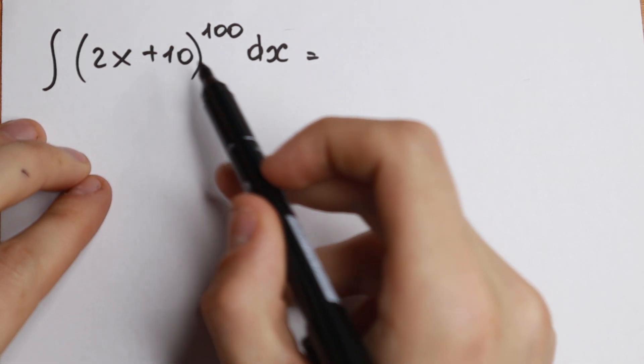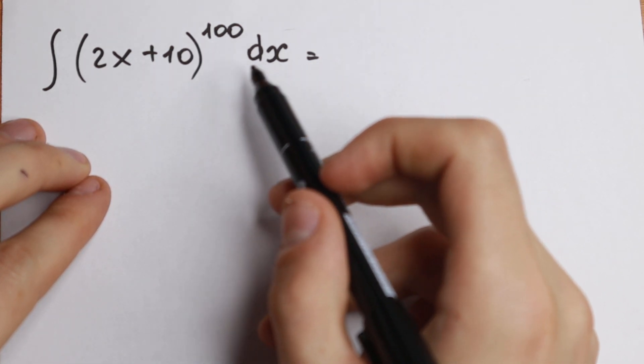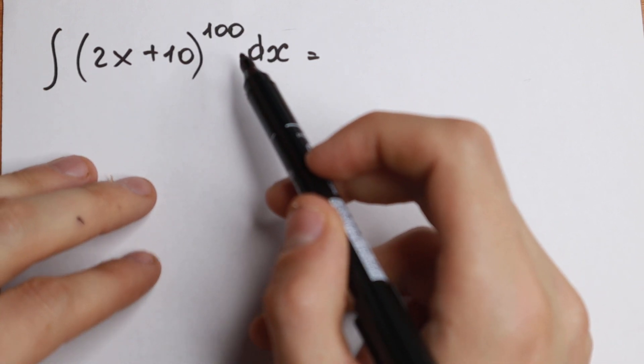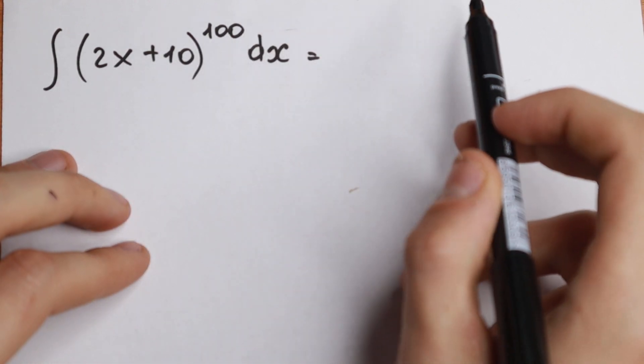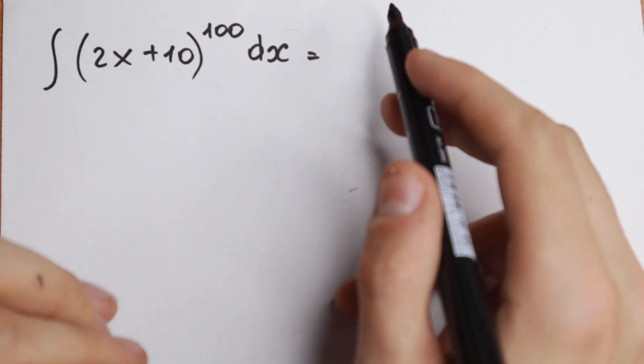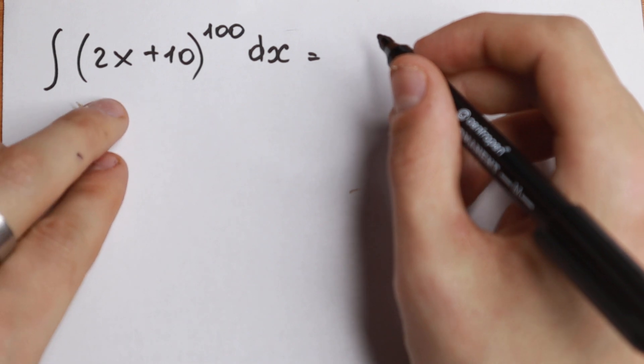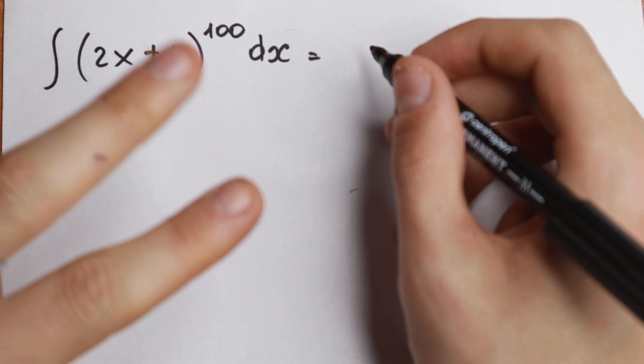We have integral of (2x+10) to the power 100 dx. On the first sight, this integral is really hard, because we have 100 power right here, so this will be a huge expression if we write it, but we don't need to write it. I want to show you a really good method how to solve it. Take a look how we can solve it easily and in 2 minutes, I guess.